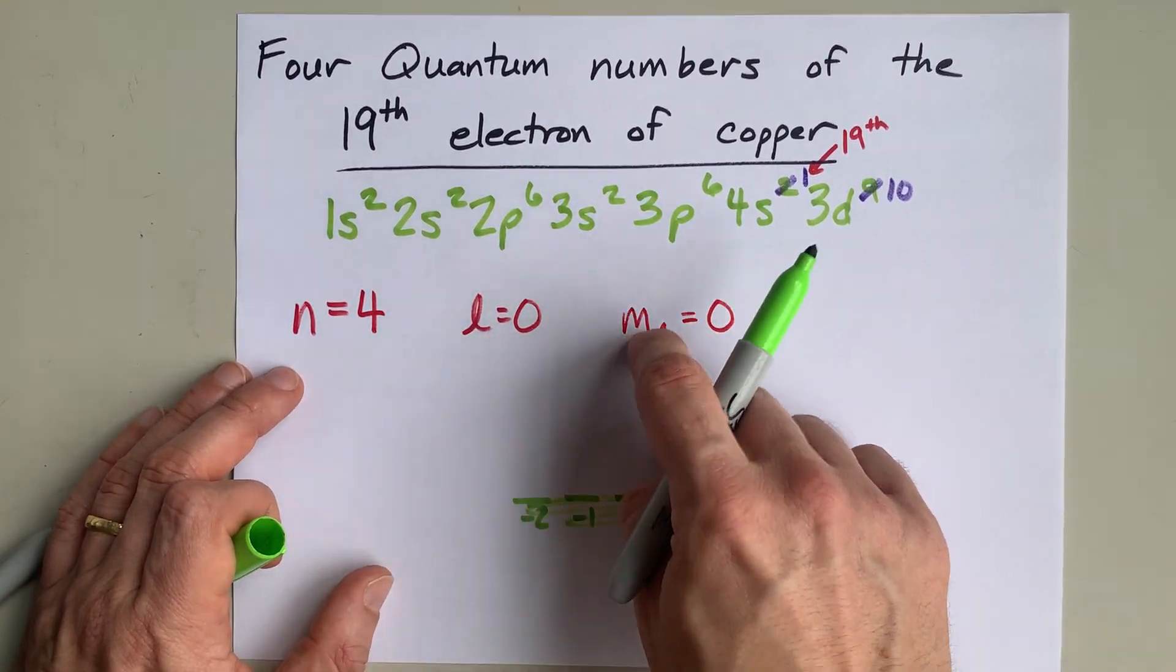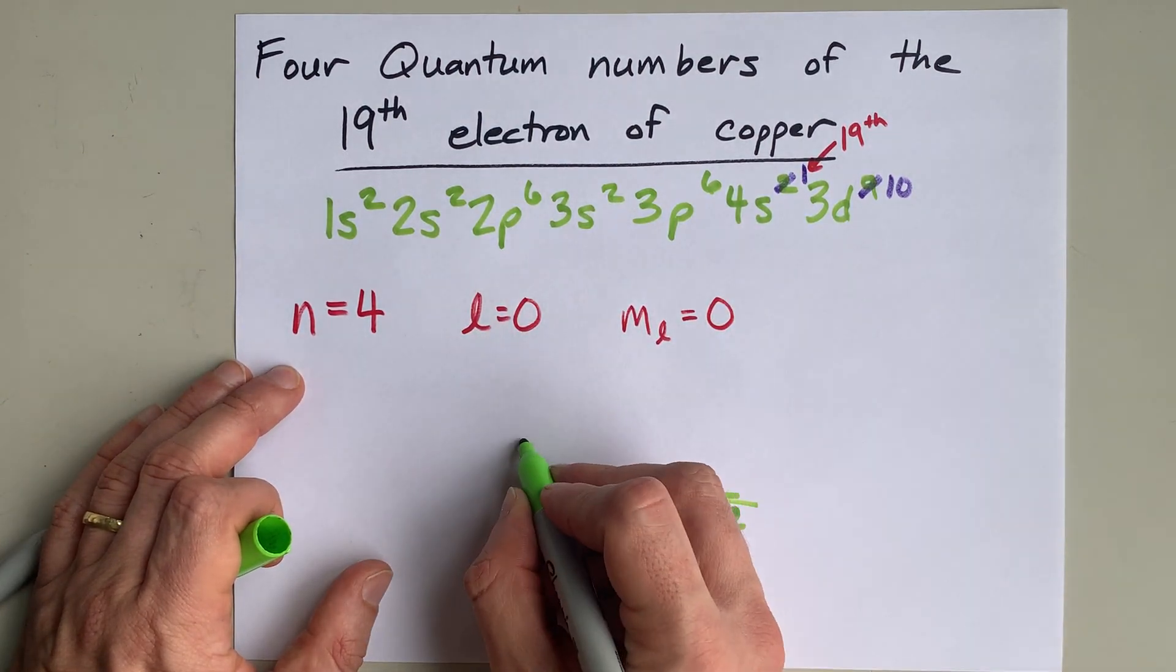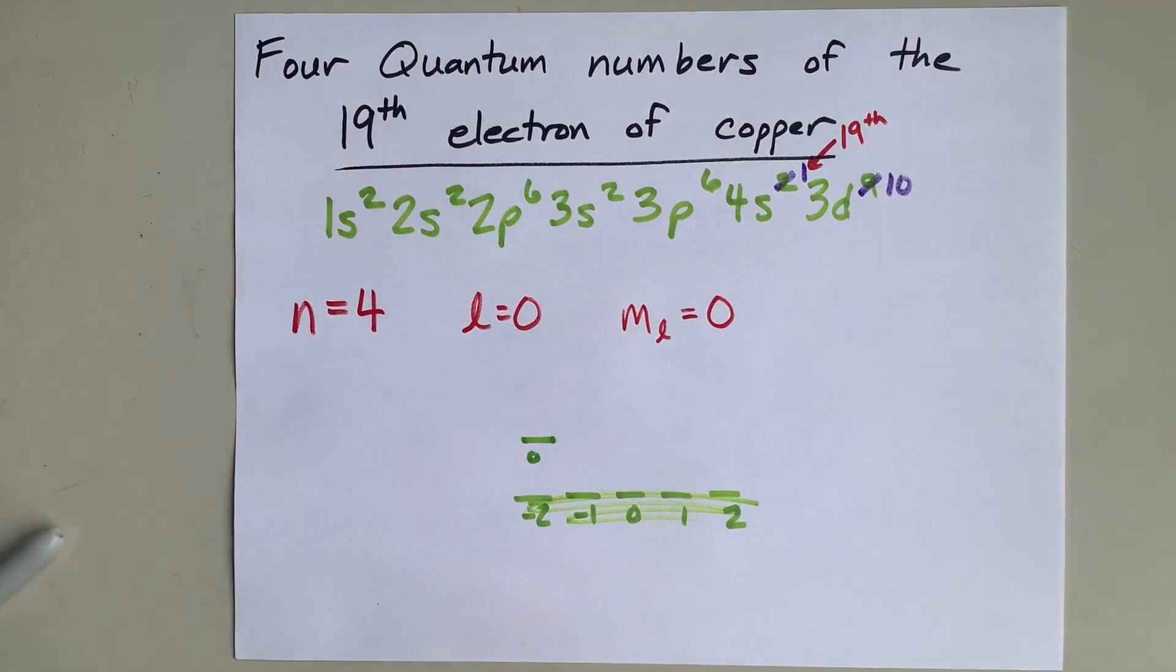If L is 0, ML has to be 0. After all, an S subshell can only hold 2 electrons, so ML equals 0 is your only choice.